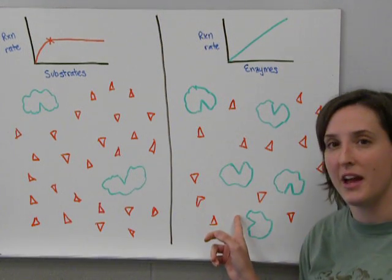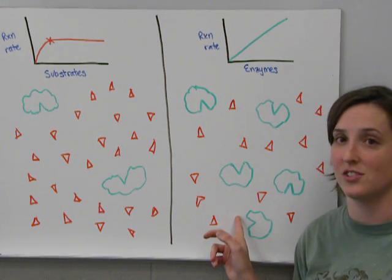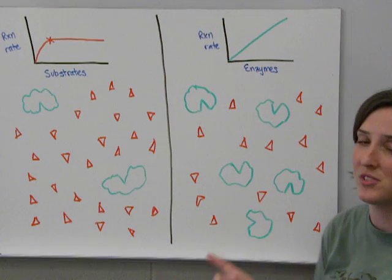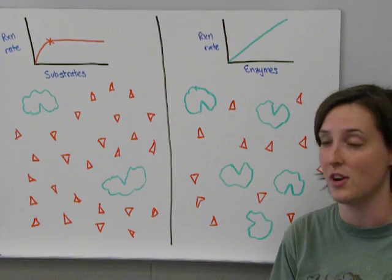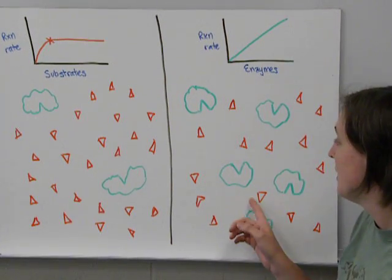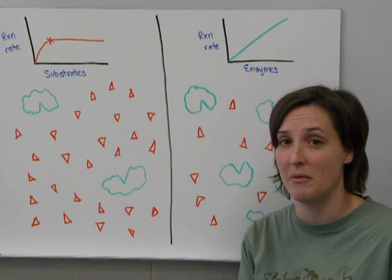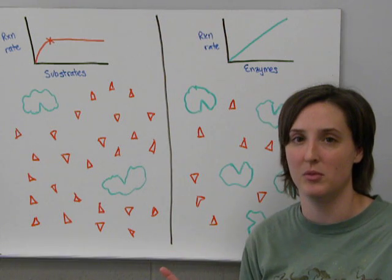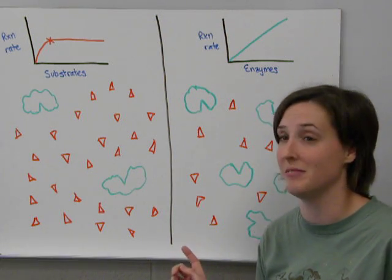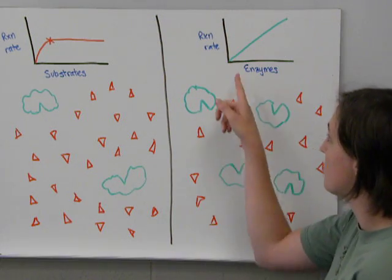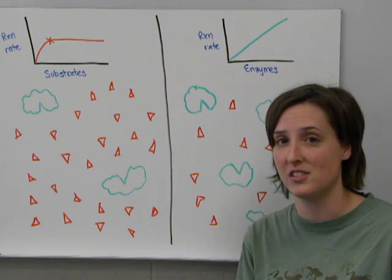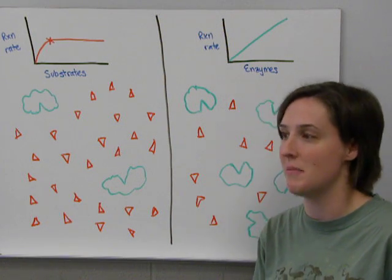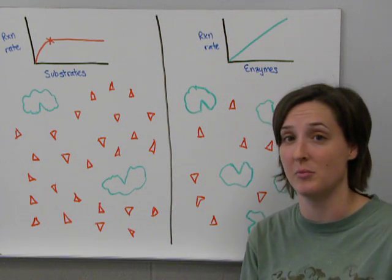With enzyme concentration, we have a higher number of enzymes per substrate. These enzymes will continue to do their job effectively as long as there's substrate available. So the rate at which enzymes can act on the substrate is proportional to the amount of substrate available.